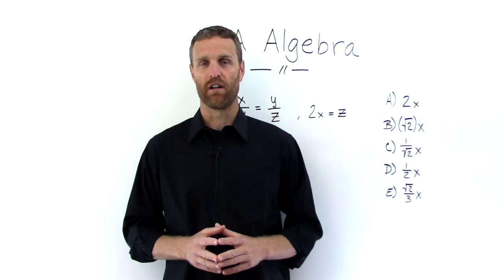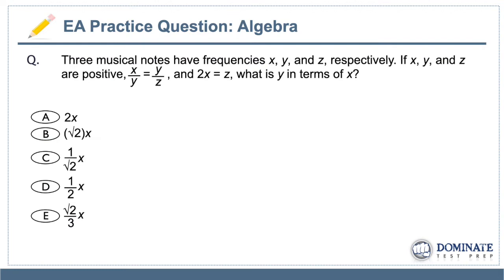But in this video, let's tackle this question. So here's the sample algebra question similar to what you could see on the executive assessment. And it says that three musical notes have frequencies X, Y, and Z respectively. If X, Y, and Z are positive, X over Y equals Y over Z and 2X equals Z, what is Y in terms of X? And then you have your answer choices with X's in those answer choices. Go ahead and press pause, give this a try on your own, and then we'll come back and we'll talk about it together.